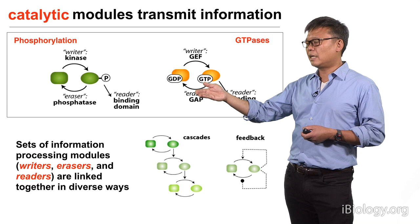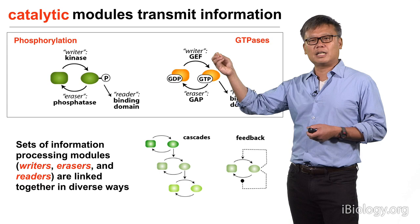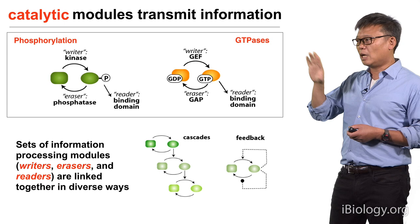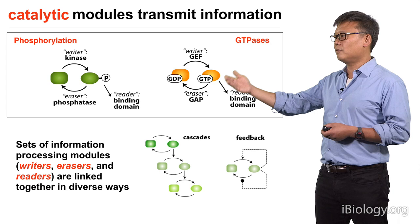In addition to this kind of writer and eraser catalytic activity, oftentimes there will also be reader domains that can recognize and bind to the phosphorylated moiety. So you have this ensemble of readers, writers, and erasers.